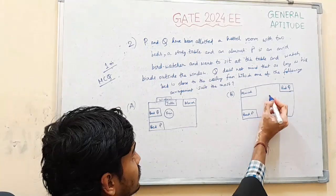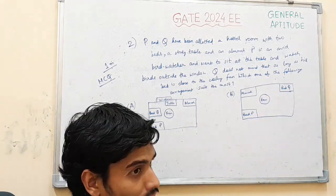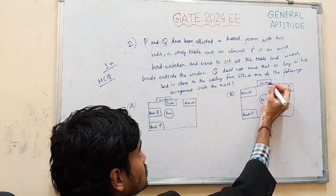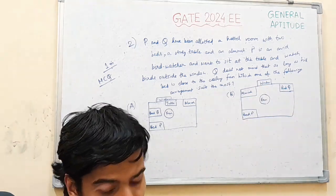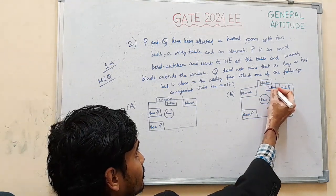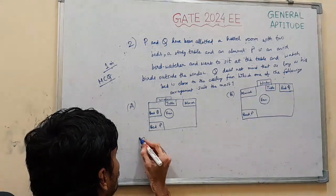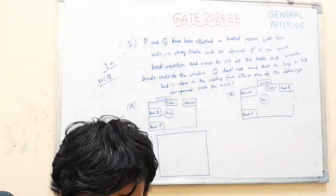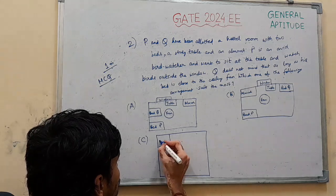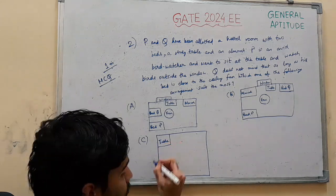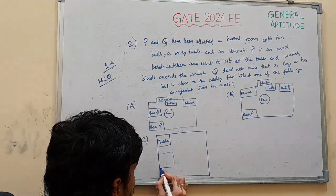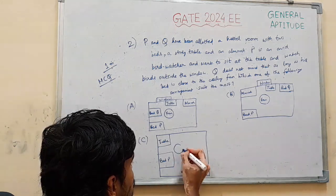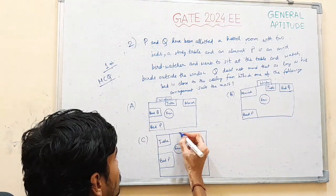The fan, the window, I'm going to have a table. Option C arrangement. Table, bed P, bed Q, and window.